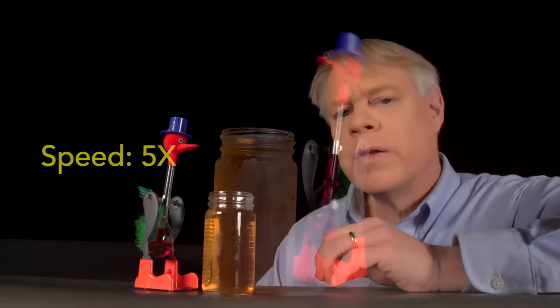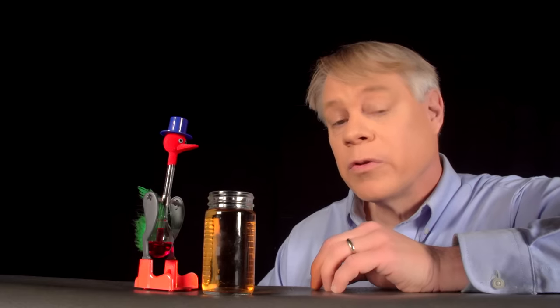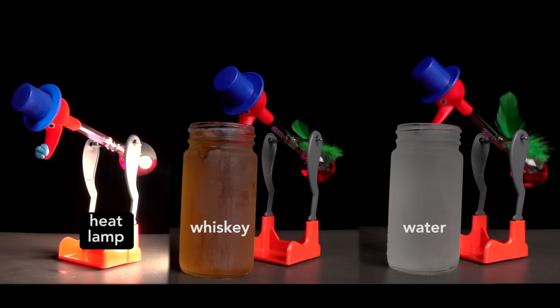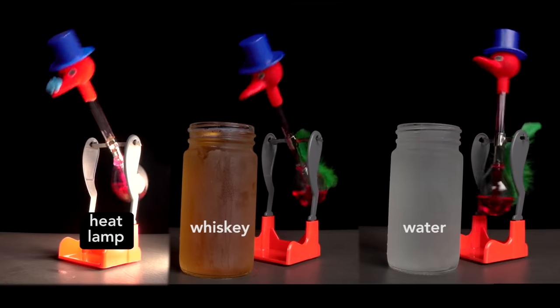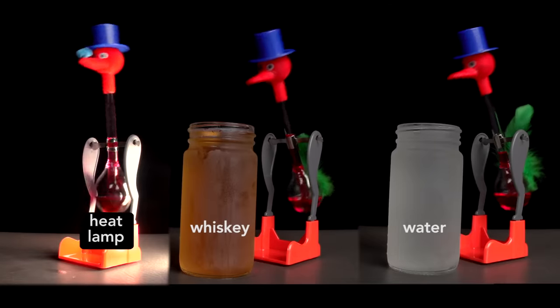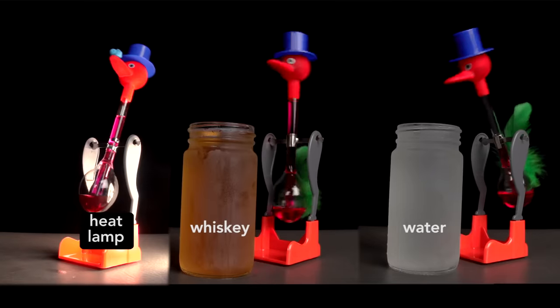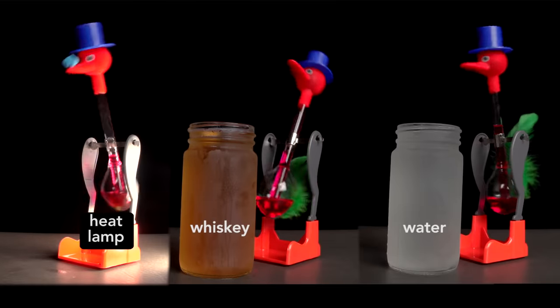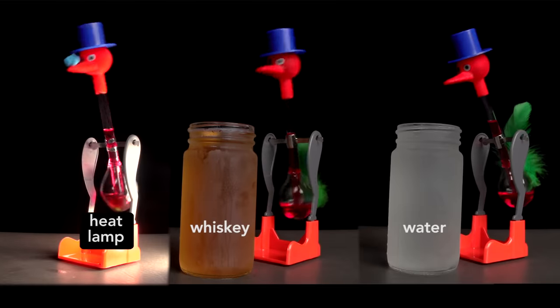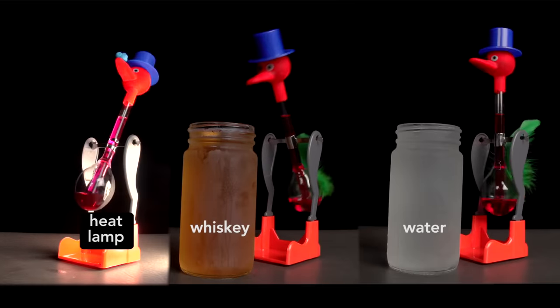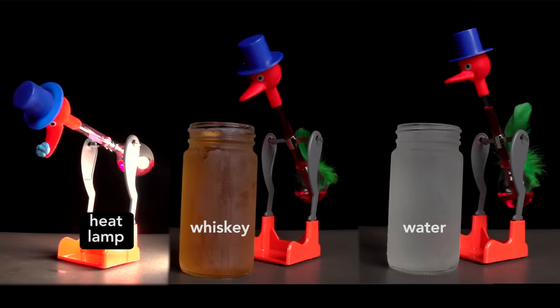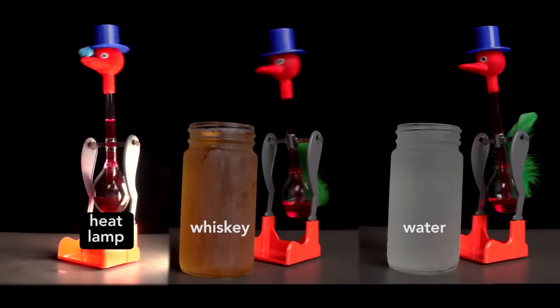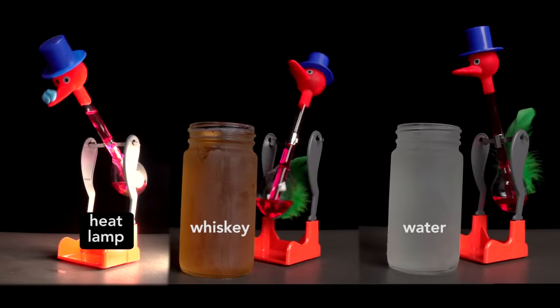We can also now understand why the bird's rate of drinking differs among the three methods I use to activate the bird: a heat lamp, whiskey, and water. Roughly, the heat bird takes three drinks for every one of the water bird. The whiskey bird takes two for every drink of the water bird. The reason the bird drinks whiskey faster than water is because the rate of evaporation of the alcohol is greater than that of water. This means that heat is withdrawn faster from the head, and so more vapor condenses in a shorter amount of time, which accelerates the pressure difference. The heat lamp causes the greatest difference of all, which highlights how an engineer thinks about this bird.